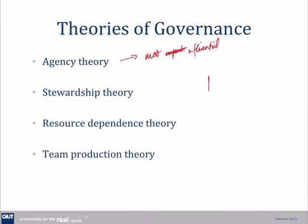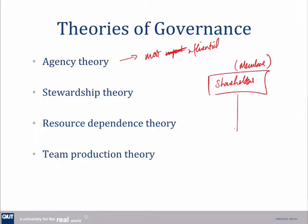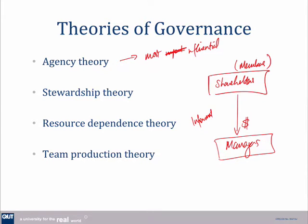The basic idea here is that we have shareholders — who technically under the Corporations Act are actually called members, because it might be a not-for-profit — but typically the shareholders give money to managers, and the managers go off and run the company. One of the things that occurs here is that the managers know what's going on and the shareholders don't. And so that really raises something called information asymmetry.